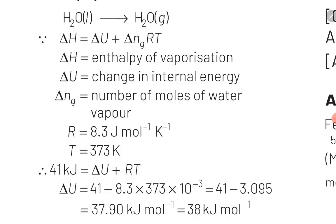The chemical reaction is H₂O(l) → H₂O(g). There is 1 mole of gas on the right-hand side and 0 moles on the left-hand side, so ΔN_g = 1 − 0 = 1. The relation between ΔH and ΔU is ΔH = ΔU + ΔN_g RT. ΔH = 41 kJ/mol, T = 373 K, and R = 8.3 J/K/mol. After substituting, ΔU = 38 kJ/mol. With this, we have completed the second question.